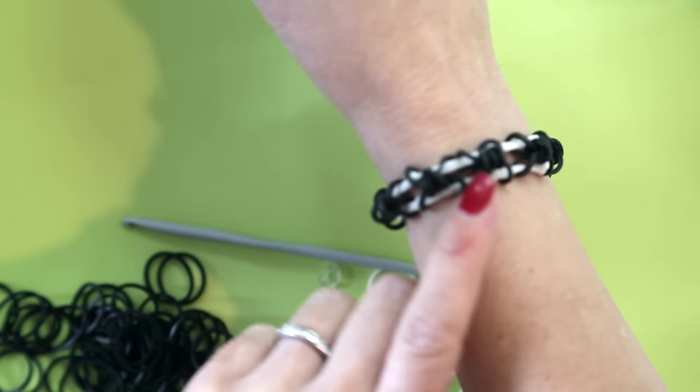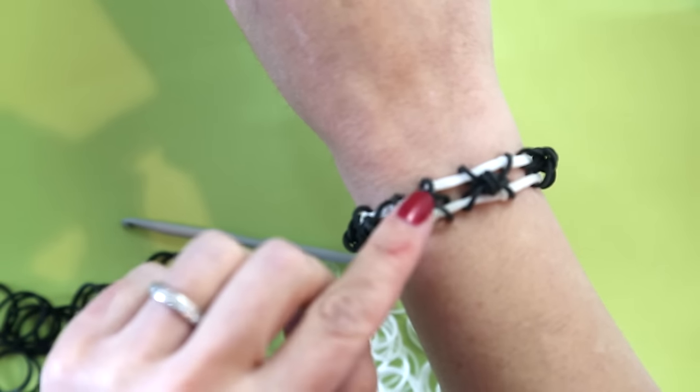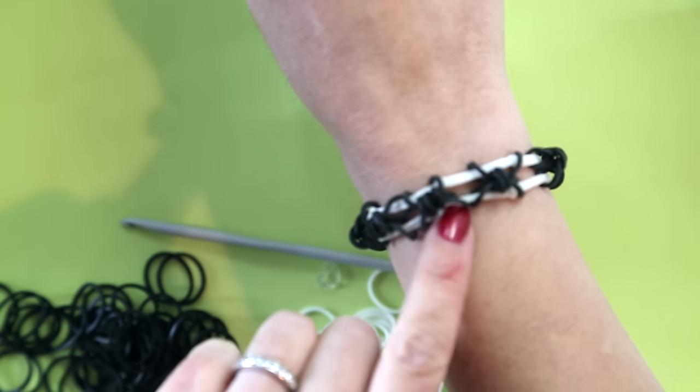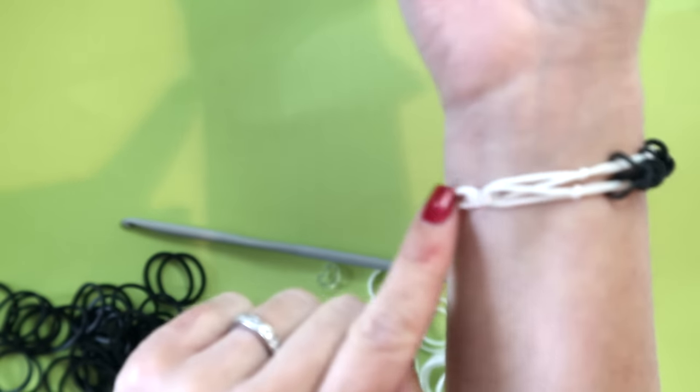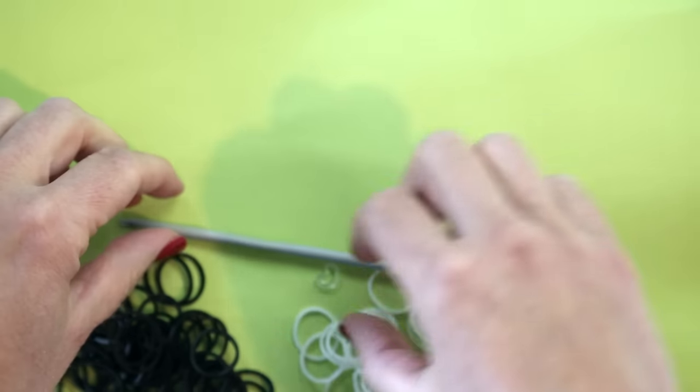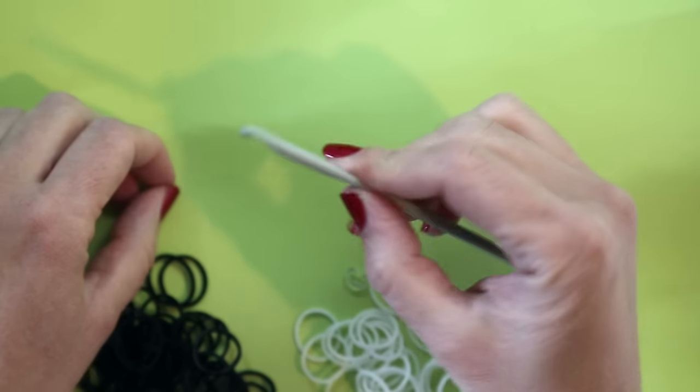You'll need two colors of rubber bands, one for the spiders and one for the web, and you'll need a c-clip to hold it together and a hook to construct your spiders.